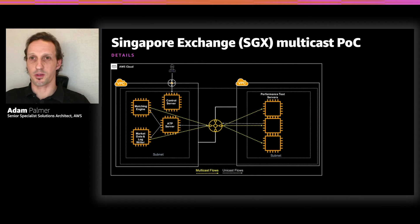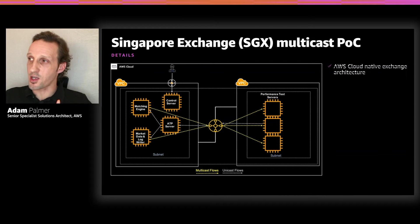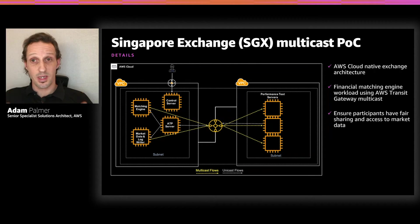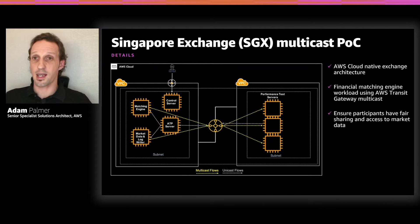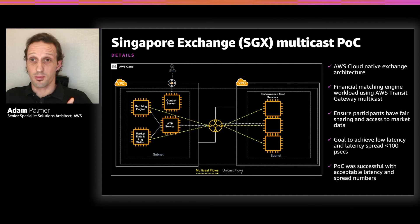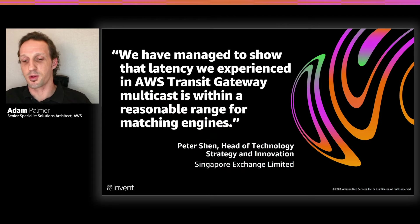So what about a real-world use case? Singapore Exchange embarked on a proof of concept to build a cloud-native exchange architecture, bringing a critical piece of their financial portfolio — the matching engine — to AWS. They used performance test servers to submit trades against this matching engine using unicast, then measured the time for trade information to come back within certain latency thresholds, ensuring fair distribution. There were aspirational goals of less than 100 microseconds for these updates, and the PoC was successful with a successful spread of latency across performance test servers.